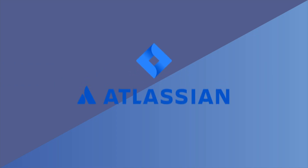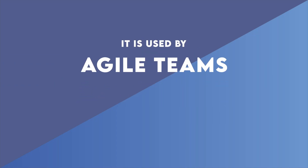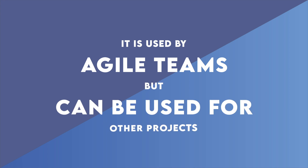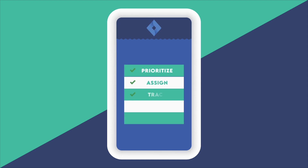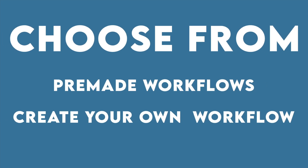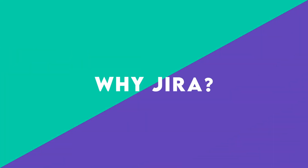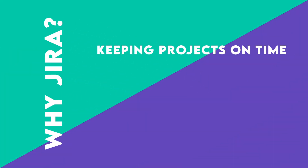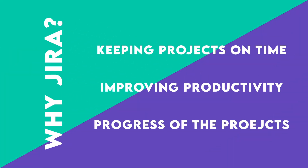Jira is the best-selling platform from Atlassian. It is often used with agile teams, but can be used outside of agile project management methods on a number of different projects. Jira lets you prioritize, assign, track, report, and audit within the platform. You can choose from different pre-made workflows, or you can create your own to fit your project and company needs. Jira is great for keeping projects on time, improving productivity, and giving an overview of where many projects are within their workflow.